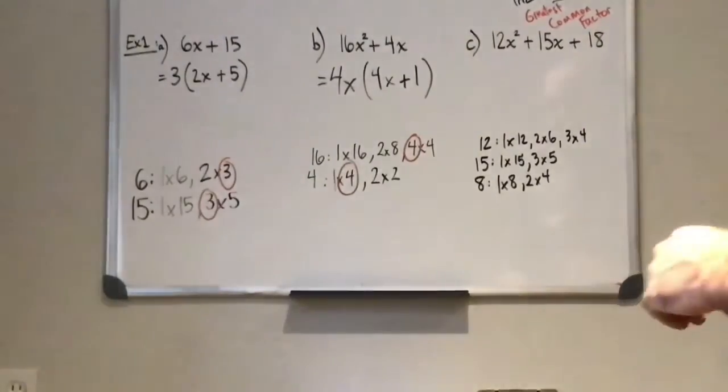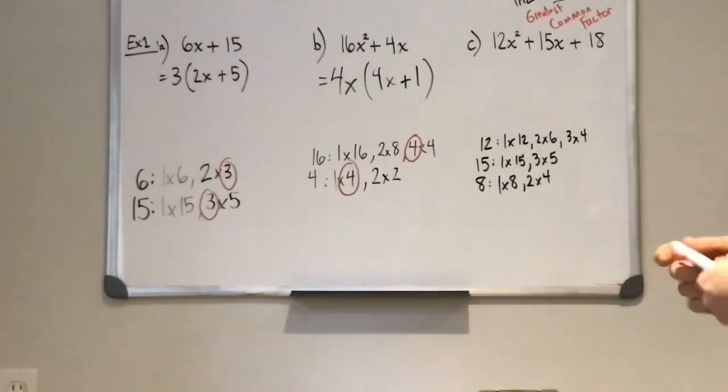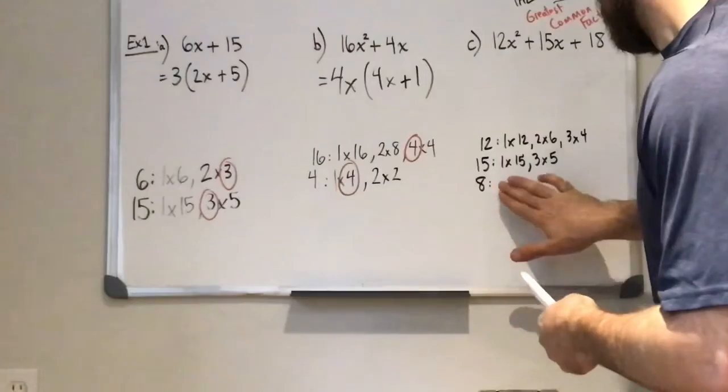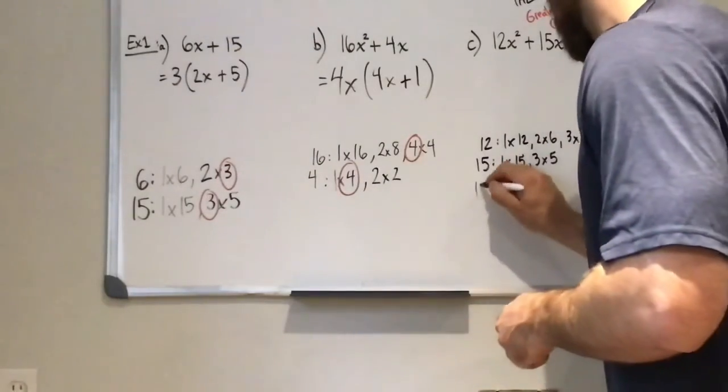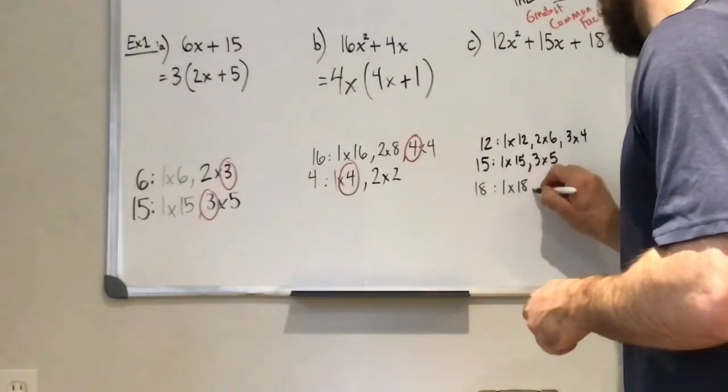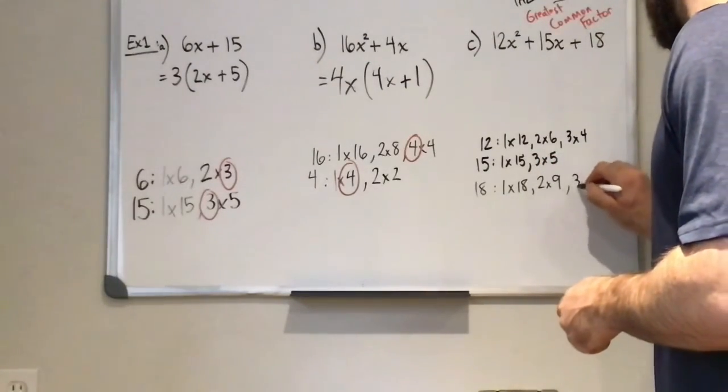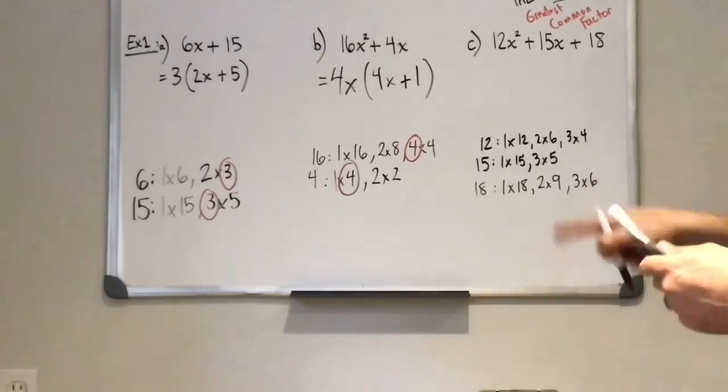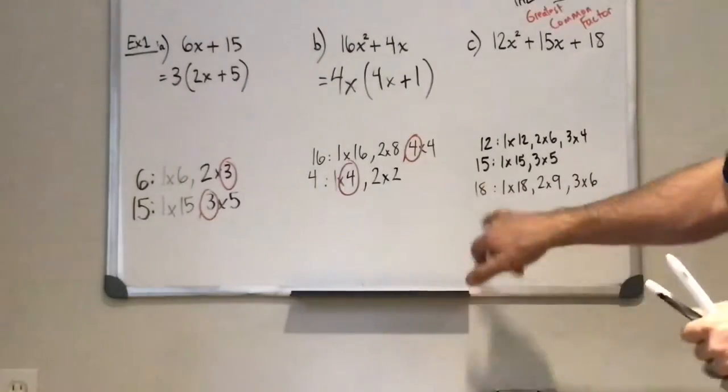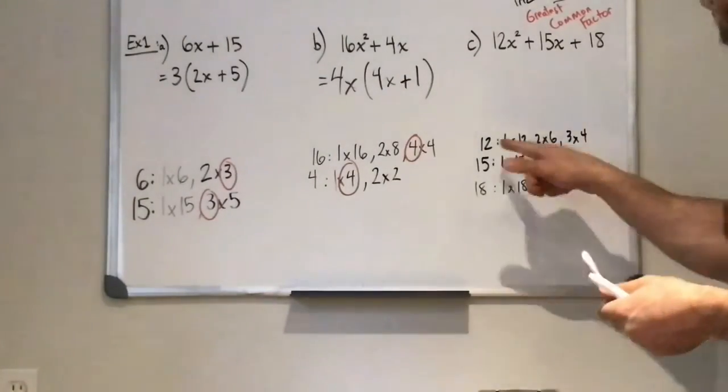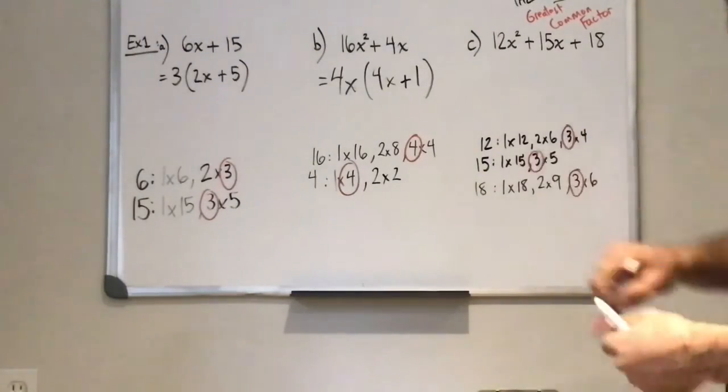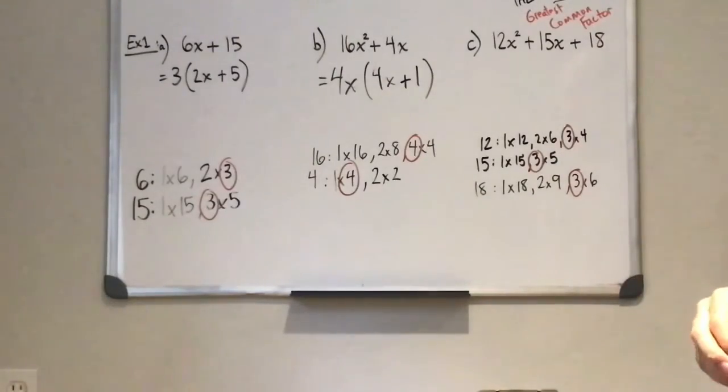Now, the biggest number that is in all 3 of these. Let's see. Oh, that should be 8. That should be 18. My mistake. Okay. 1 times 18, 2 times 9, 3 times 6, 4 doesn't work, 5 doesn't work. There's 6. Okay, that's better. Wrong number. So now the biggest number in all 3 of these lists, I think, is 3. So 3 is the biggest number in all those 3 lists.